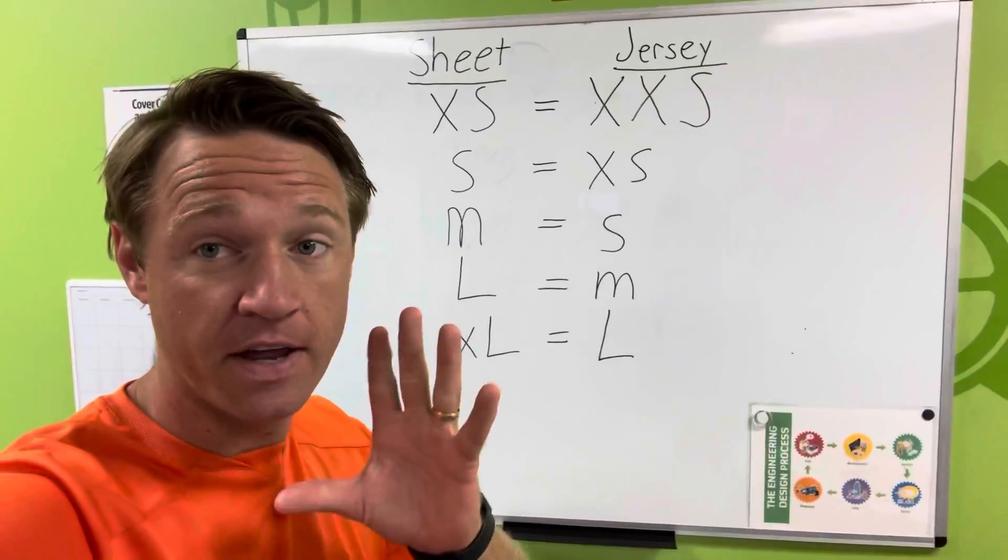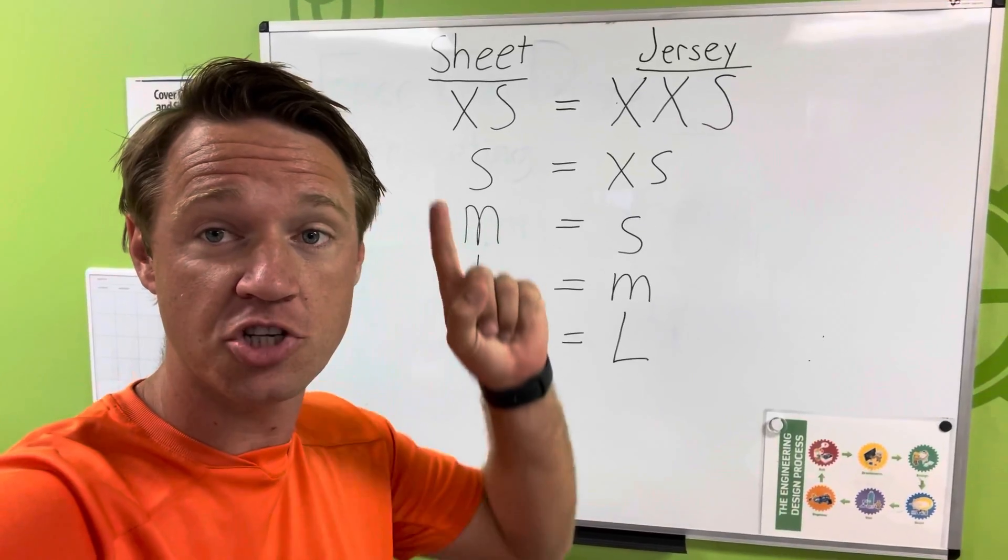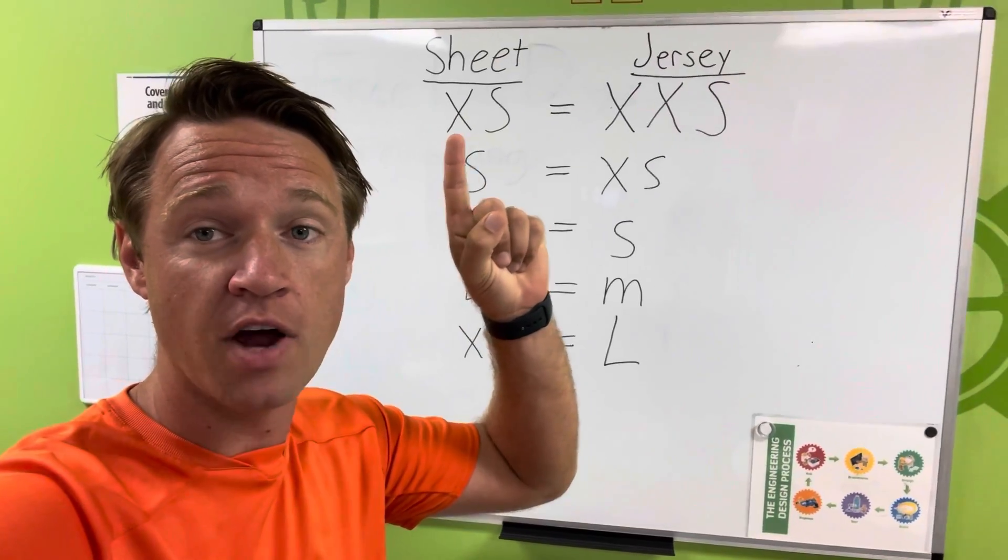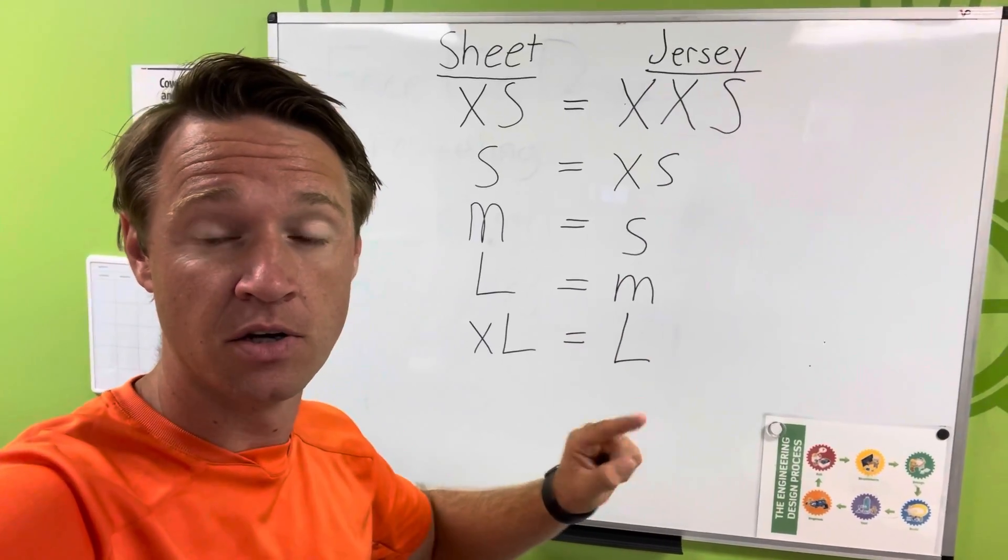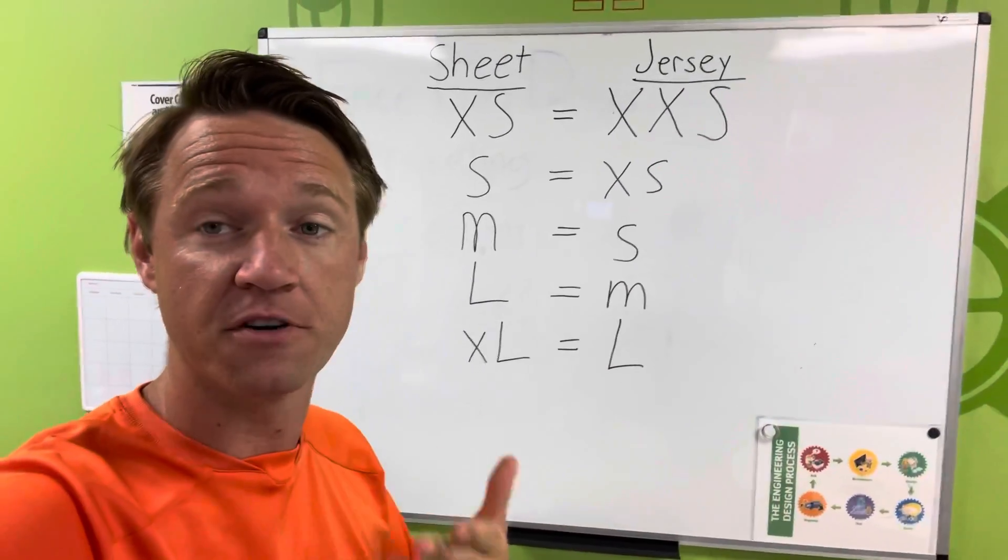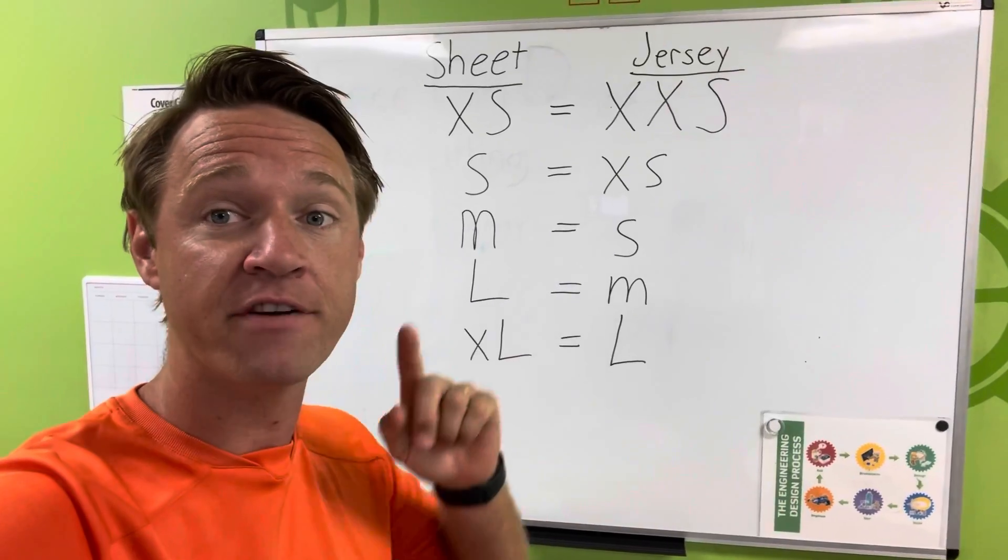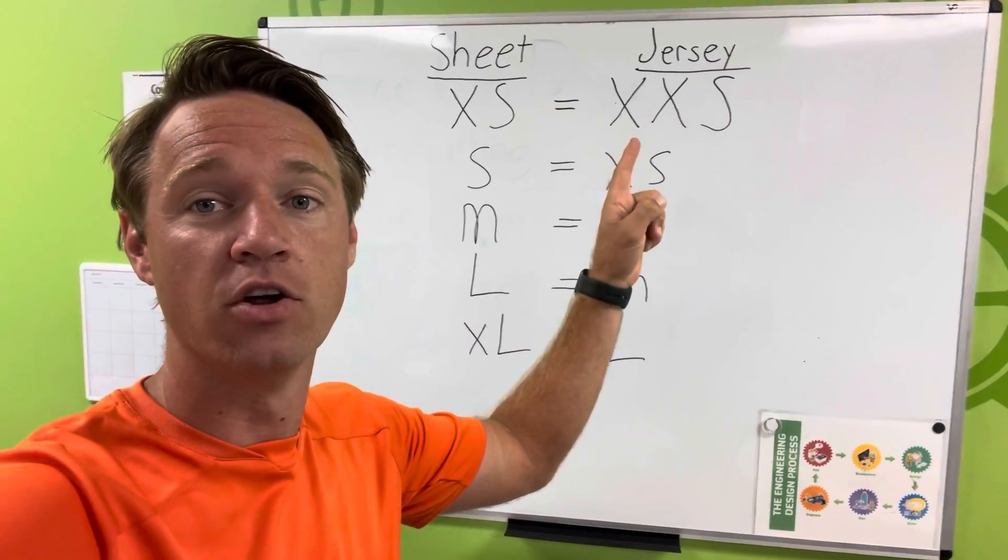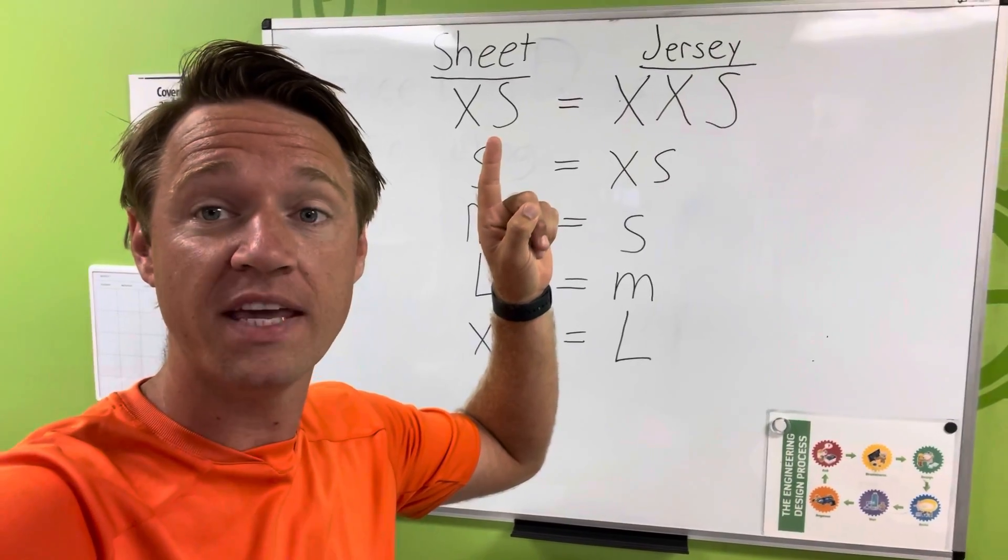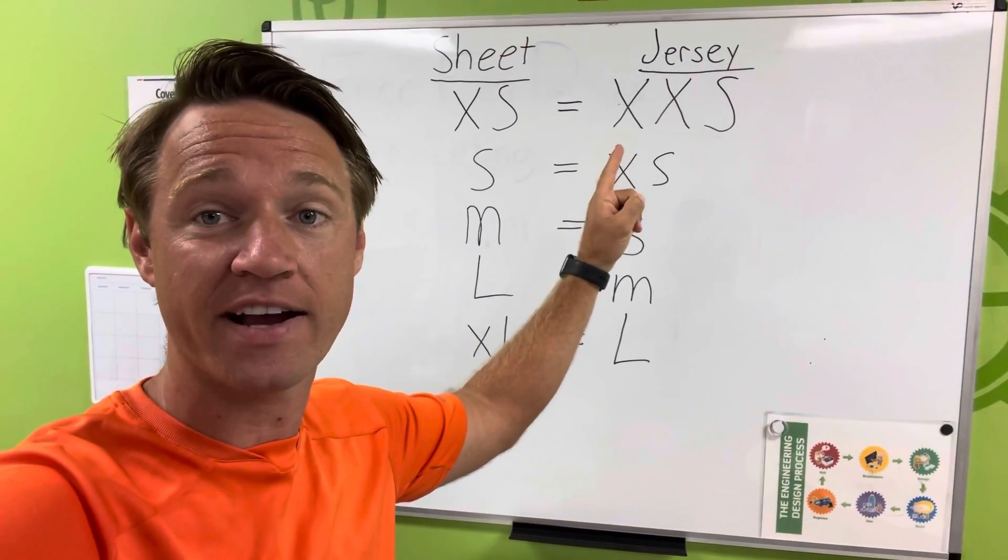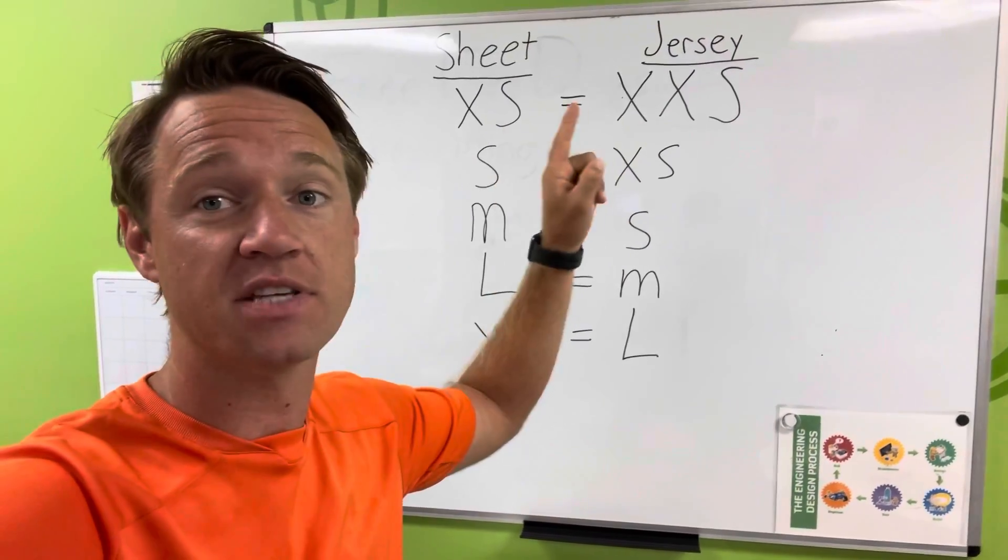Coaches, very important. The sizes on the sheet you have do not correlate to the jersey sizes in your boxes. We had to order from a different supplier this year and every jersey size is down one. So if it says extra small on your sheet, you'll be giving that child an extra extra small jersey. They're the same size.